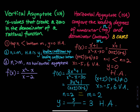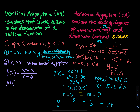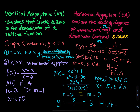Case 3 is when the leading degree of the top is greater than the leading degree of the bottom. Here the numerator is degree 2 and the denominator is degree 1, so 2 is greater than 1. This function has no horizontal asymptote. For the vertical asymptote, the denominator cannot equal zero, so when x equals 2 there is a vertical asymptote.